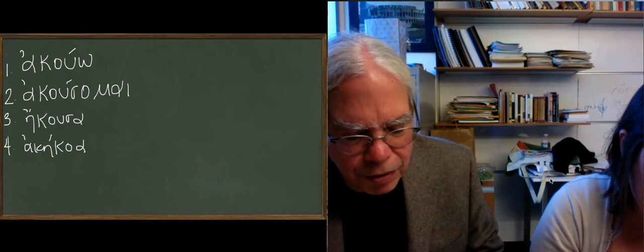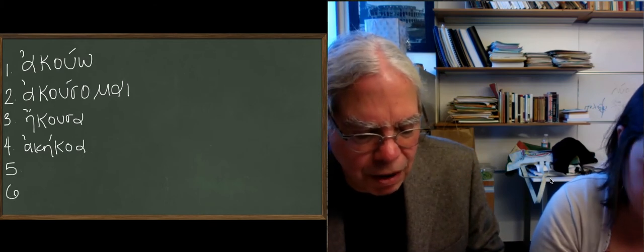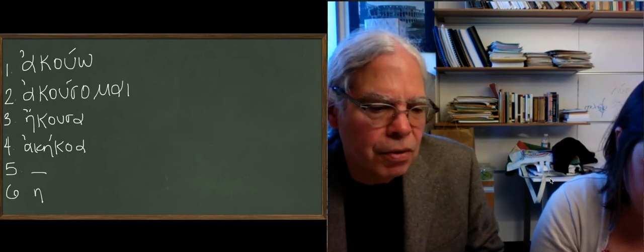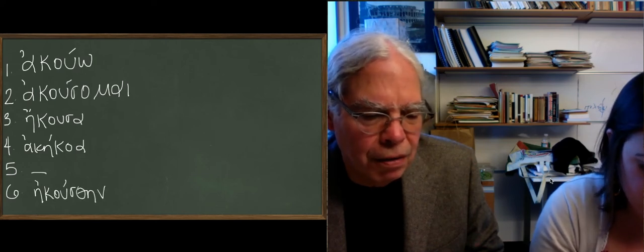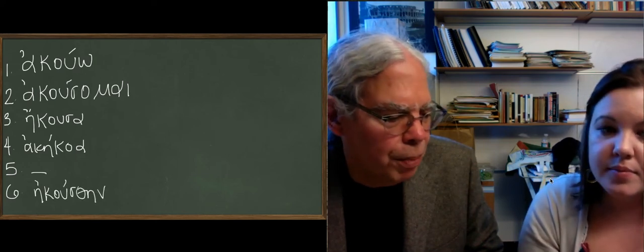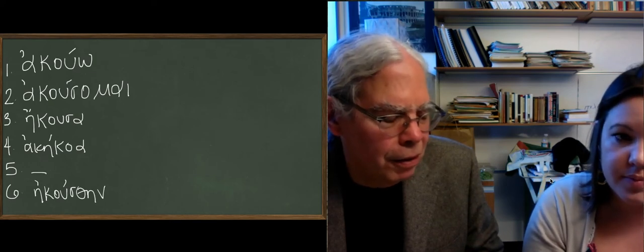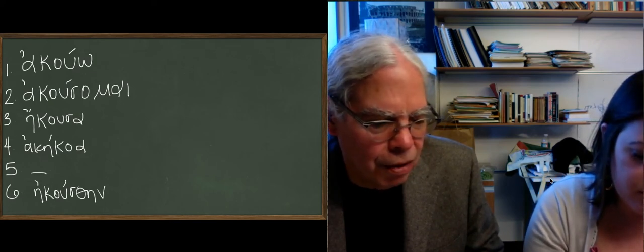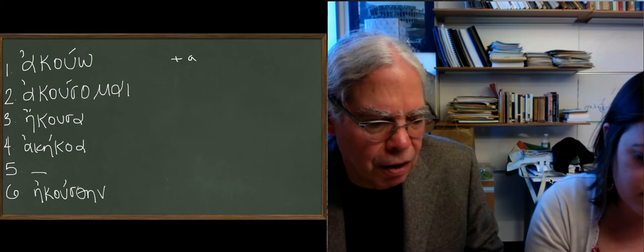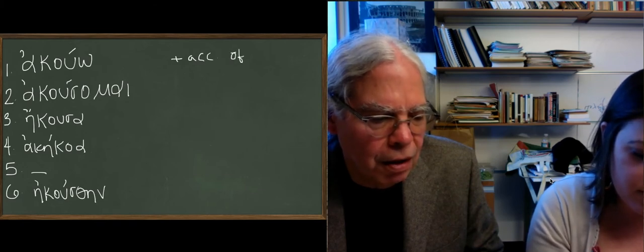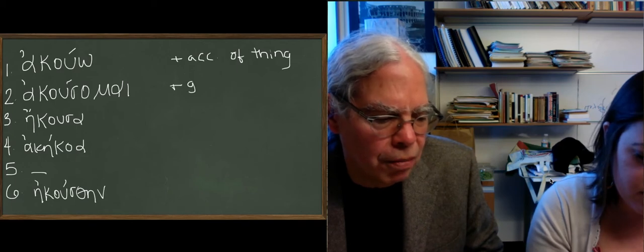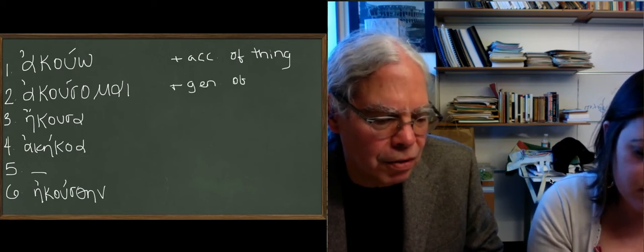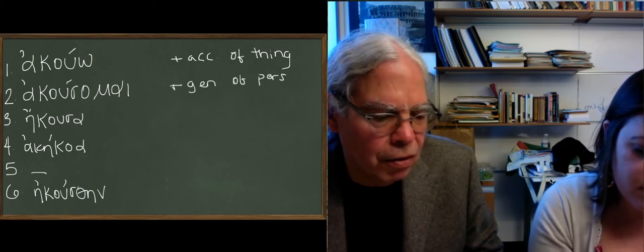The book tells you, plus the accusative of the thing heard and the genitive of the person heard. So this is, I heard a noise from, or I heard a speech from Bill. So the thing that you hear, and the person who's saying it, the thing goes in the accusative, and the person making the noise goes in the genitive case. That's a kind of interesting notion.